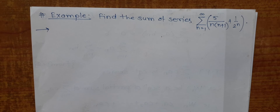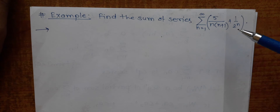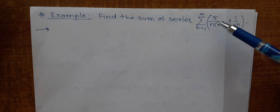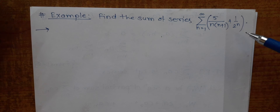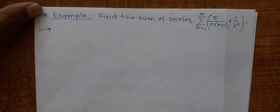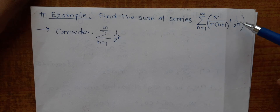Let us solve this example of a series. We have this series and we have to find its sum — that means we have to find a real number where it converges. Since many terms are there, we will deal with all those terms one by one. First, I will consider the summation of 1/(2^n) only.